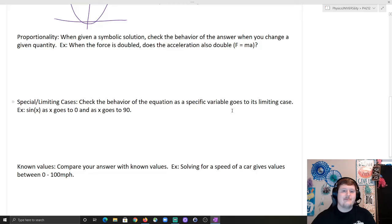Proportionality. When given a symbolic solution, check the behavior of the answer when you change a given quantity. For example, when the force is doubled, does the acceleration also double? This is great. Hey, I know f equals ma. If my force goes to two force, does a also go to two a? Does it double, right? So, you can just check, hey, I'd put a two on this side. There has to also be a two on this side, and when that happens, does that actually happen, or are you getting some weird dependence here because your equation's wrong?